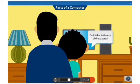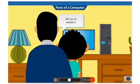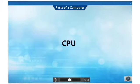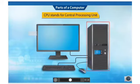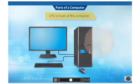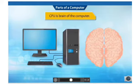Dad, what is the use of these parts? Okay, let me explain. This is the CPU. The full form of CPU is Central Processing Unit. It is the brain of the computer. It controls all the other parts of the computer.